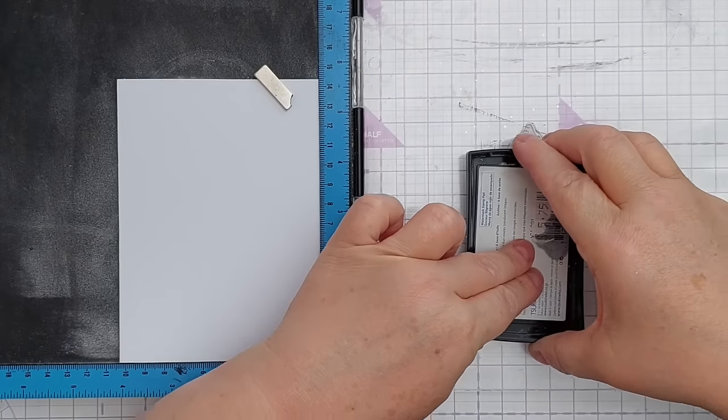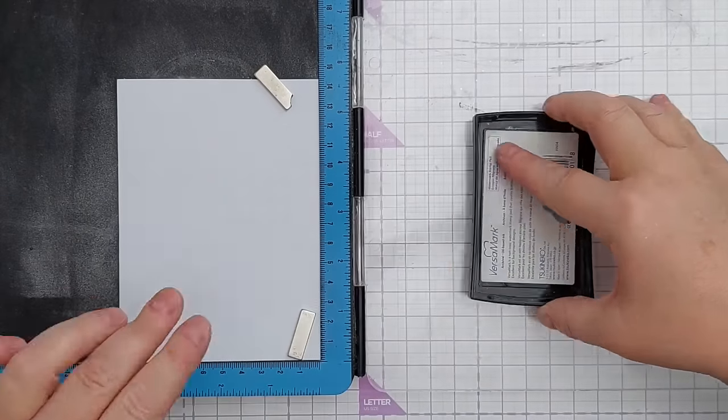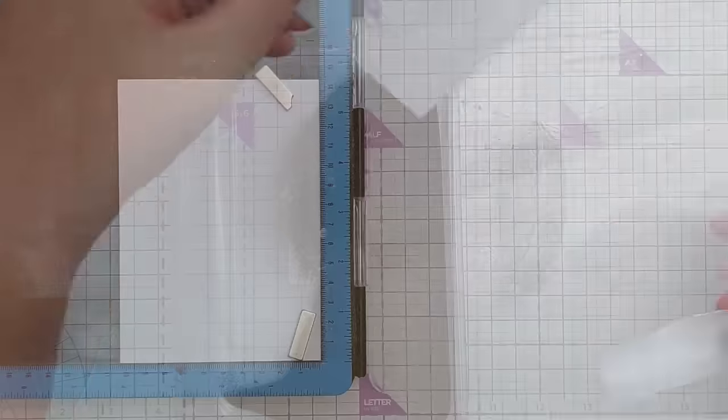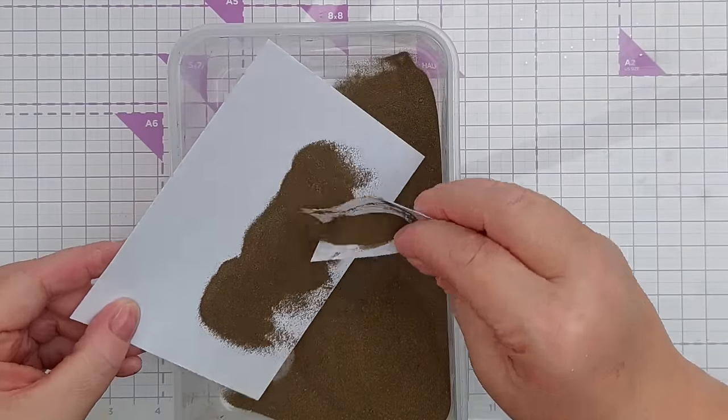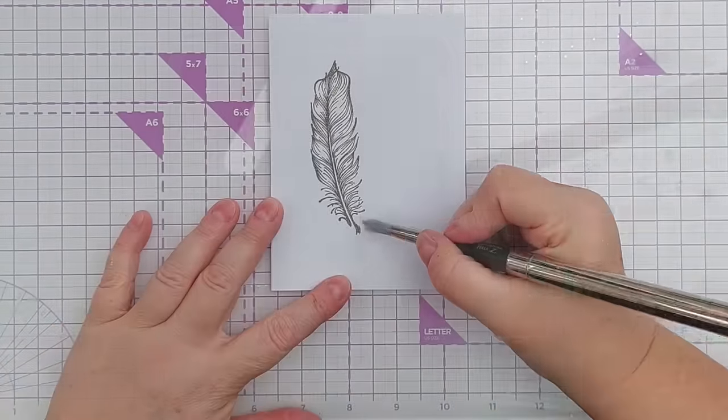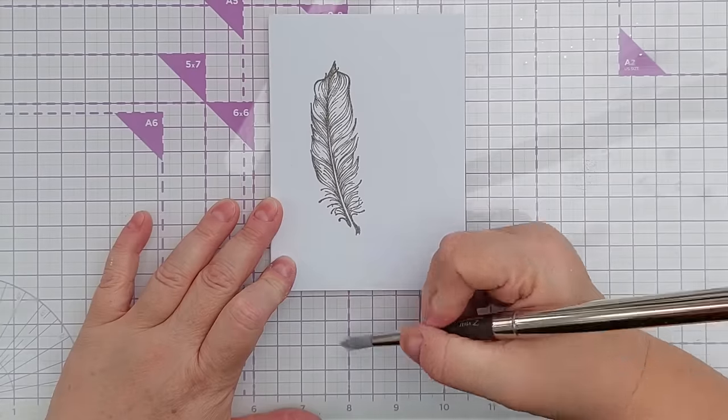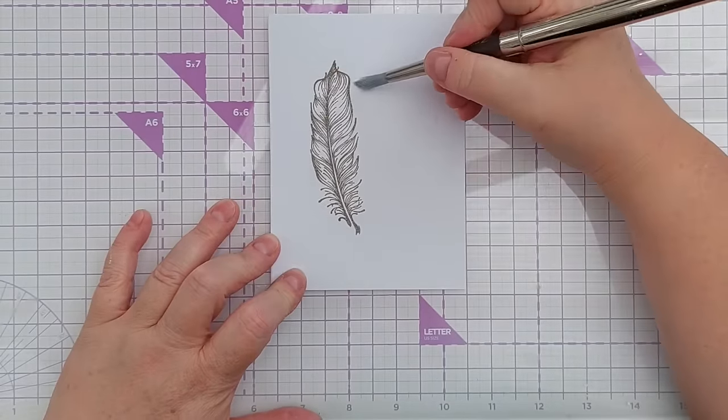And ink this up with embossing ink, and I shall sprinkle some gold over this. There's a few stray bits of embossing powder which I'll just brush away.